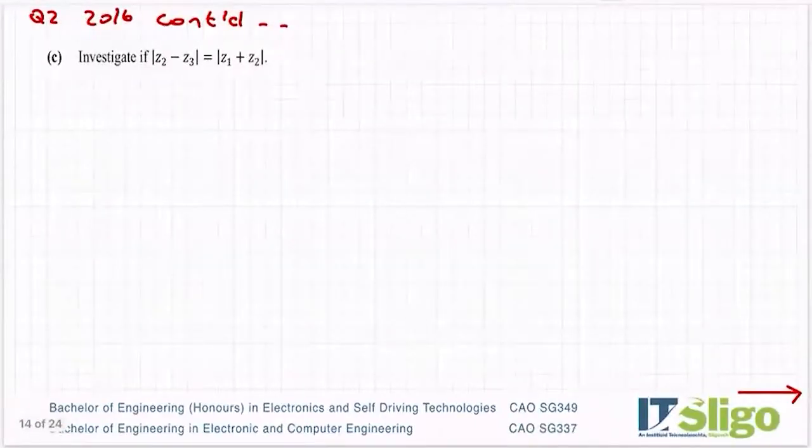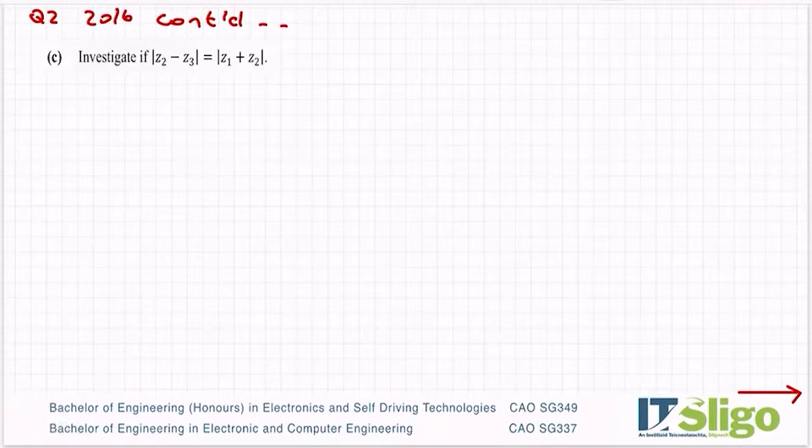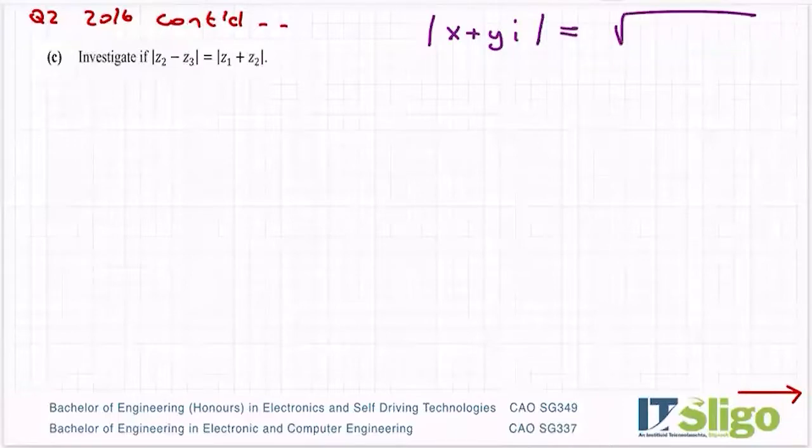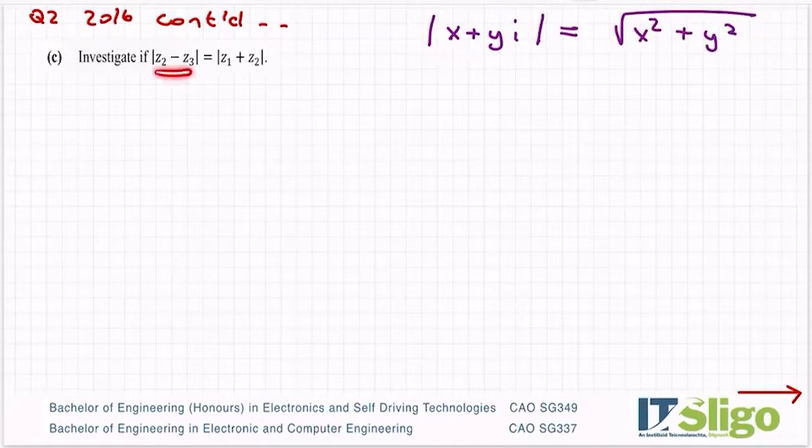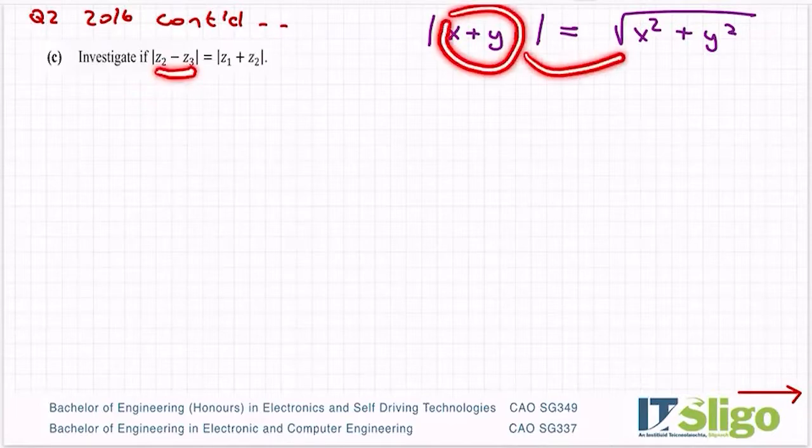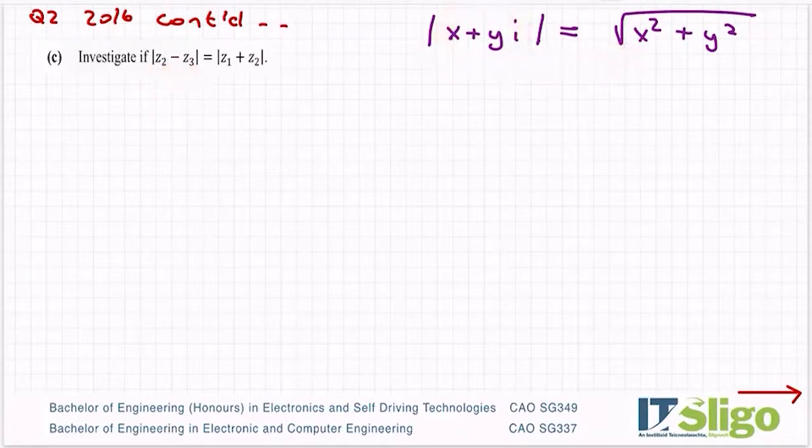I hope that makes sense. Real first then imaginary. The next part: investigate if the modulus of Z2 minus Z3 is equal to the modulus of Z1 plus Z2. Because this is inside I have to find a complex number in the form x plus yi for Z2 minus Z1. The modulus of a complex number is the square root of x squared plus y squared, it's like Pythagoras's theorem. Therefore I need a single answer, a single complex number for Z2 minus Z3 first so that I can plug it into this formula.